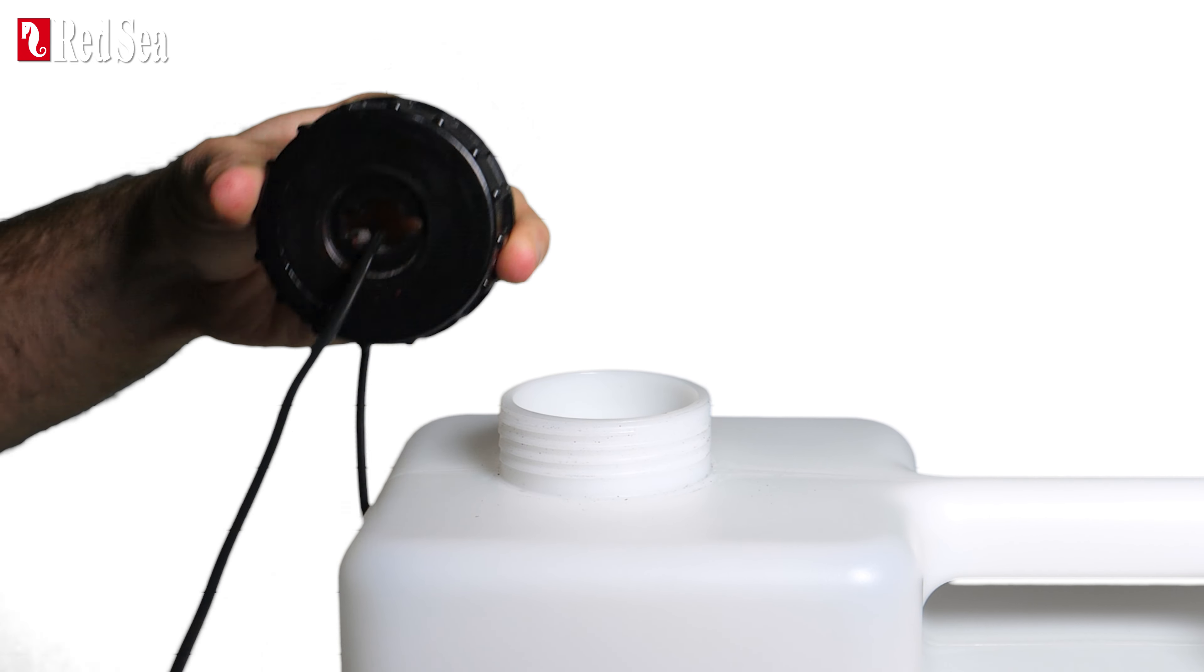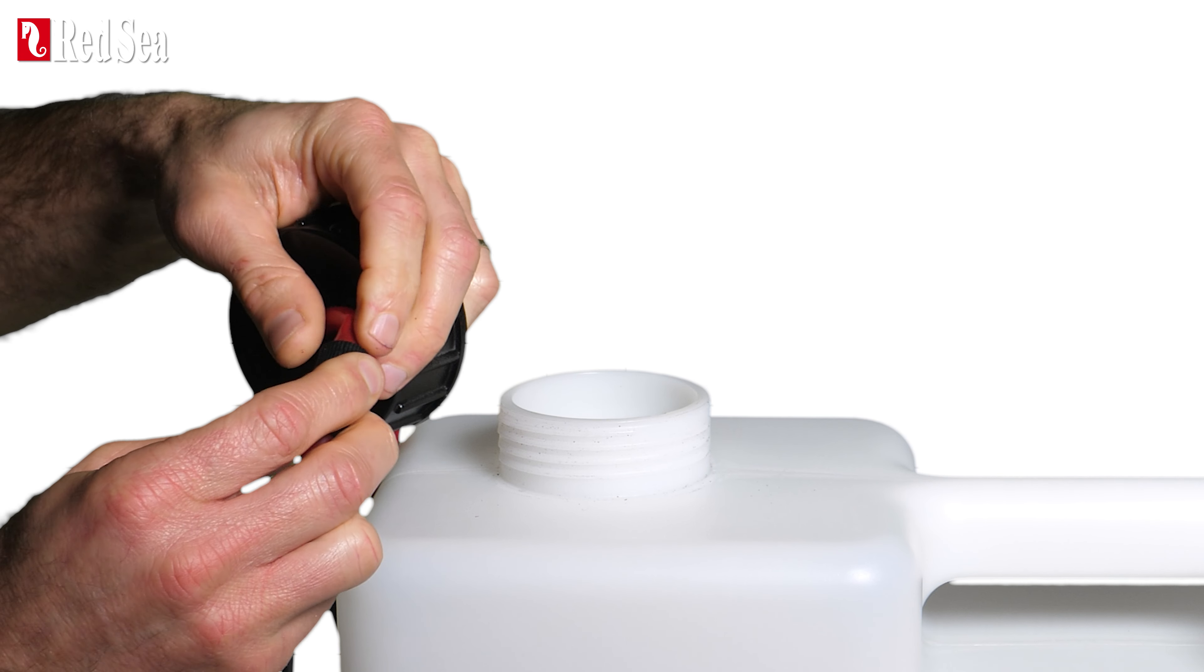Now do the same for the pump tubing. Make sure the tube is connected to the pump, and then connect it to the siphon breaker.